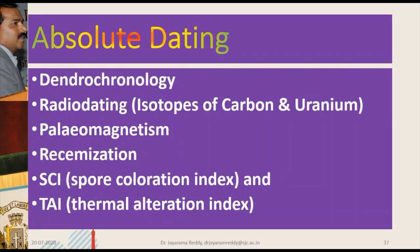The methods of absolute dating include dendrochronology, radio dating, paleomagnetism, racemization, and TAI. These are methods of absolute determination of the age of the fossil. If you discover a stem, take a section and count the number of annual rings — by counting the annual rings, you can know the age of the fossil. This is absolute dating.